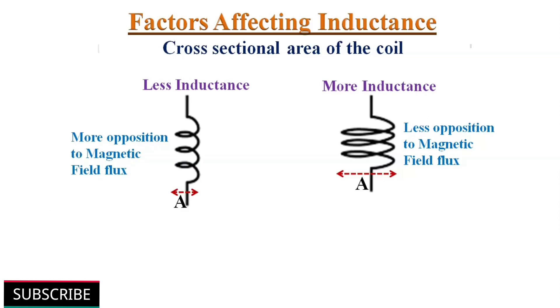Next one, cross-sectional area of the coil. The cross-sectional area of the coil is directly proportional to the inductance of the coil. It requires more wire to construct a coil of large cross-sectional area. Hence, it can generate a greater amount of magnetic field, so less opposition to the formation of the magnetic field flux. Recall the formula for area of a circle: pi r squared. Hence, doubling the radius of a coil increases the inductance by a factor of four.